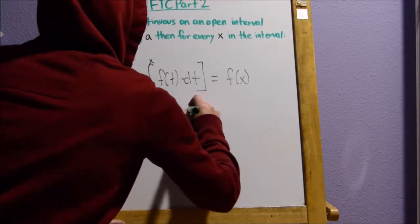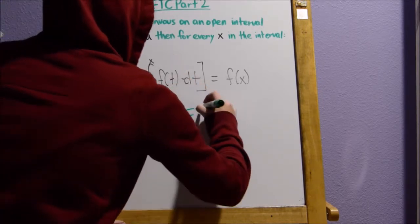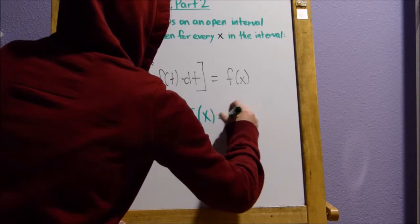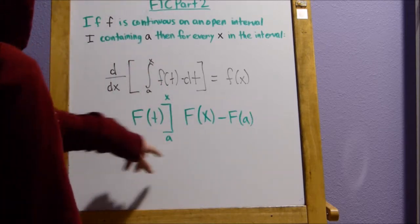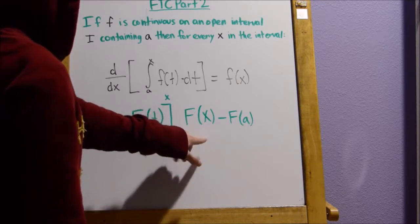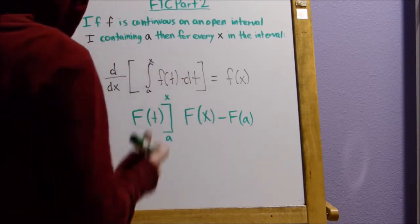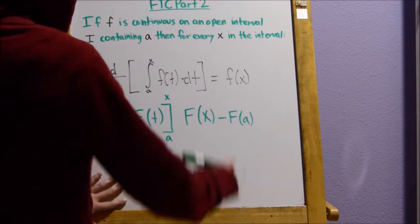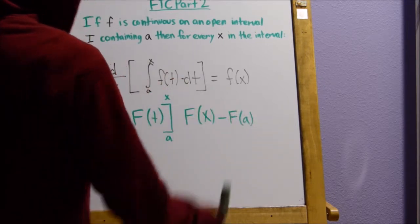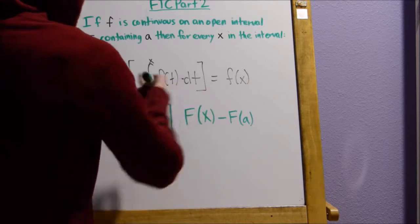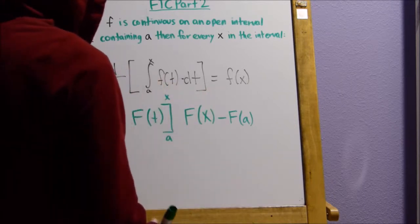So then we have, using FTC Part 1, f of x minus f of a. Now, notice this is going to be f of x, but this f of a is going to be a number. We know this because whatever this function is, if you plug in a, which is going to be a number, you're always going to get a number back because you can plug it in.